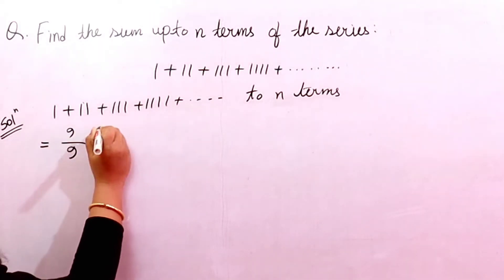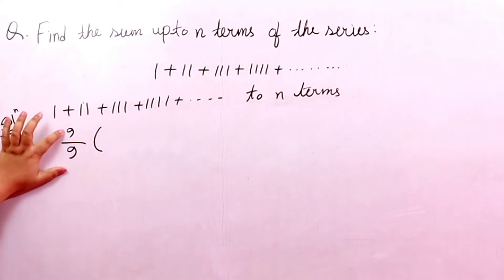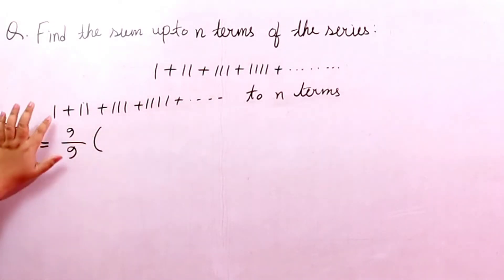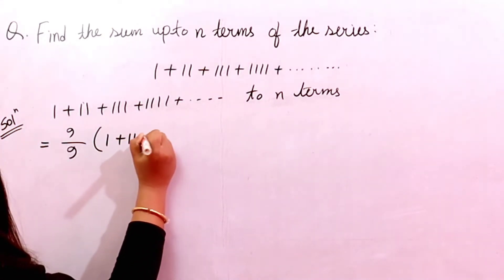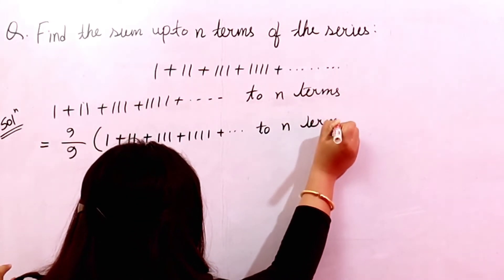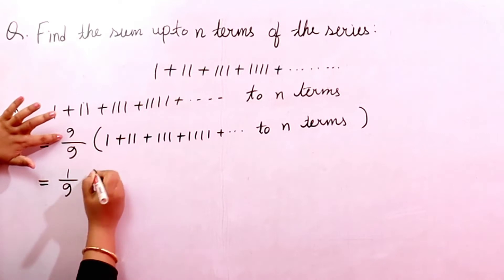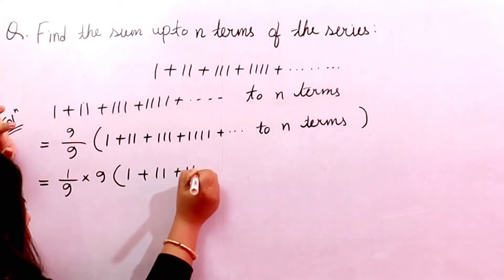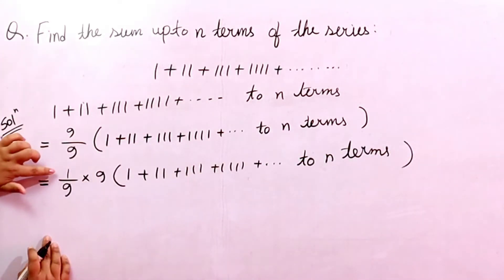If we multiply the series by 9/9, the value remains 1, so the original meaning of the expression stays the same. First of all, we multiply it by 9/9, which keeps it unchanged. We take 1/9 outside and multiply the series by 9, giving us 1, 11, 111... up to 2n terms — still the same meaning since 9/9 equals 1.